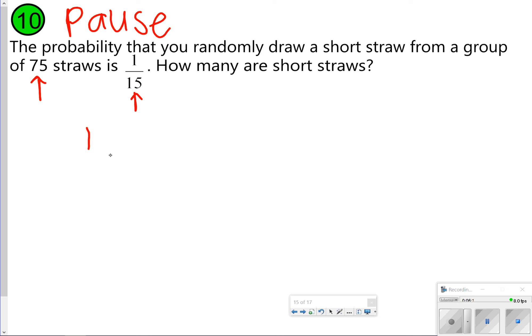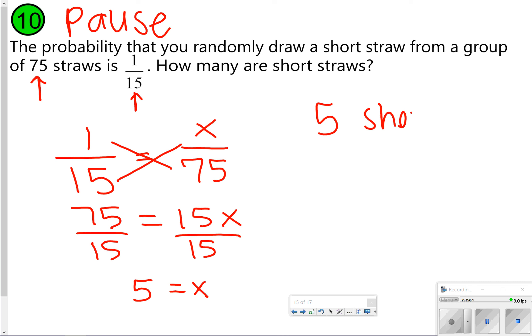Okay, what you should have started to try is the 1 15th. And then we know that there's a group of 75. So out of 75, x over 75. I cross-multiply to start solving. 1 times 75 is 75. 15 times x is 15x. And then I'm going to divide both sides by 15. 15 will go into 75 five times. So in this one, there are five short straws in this section.